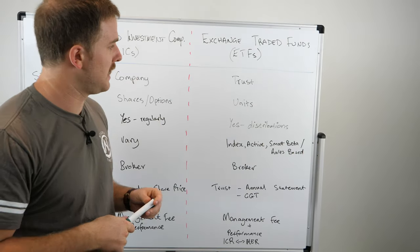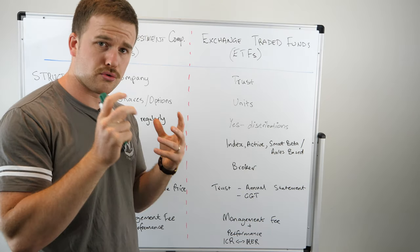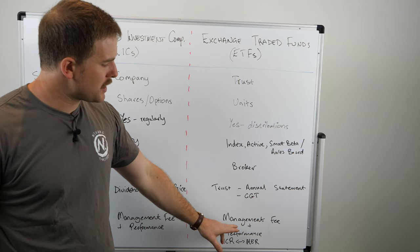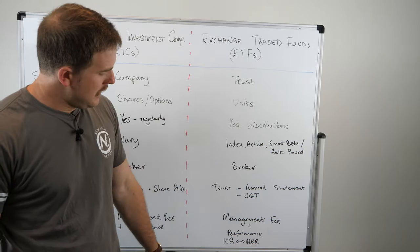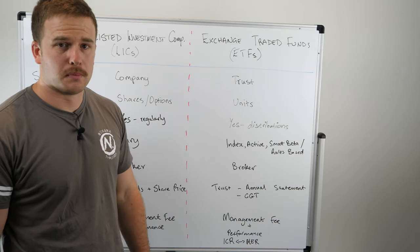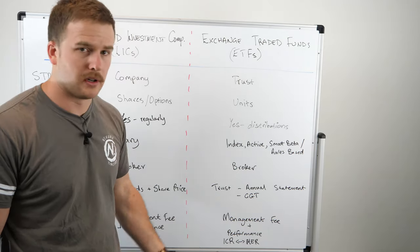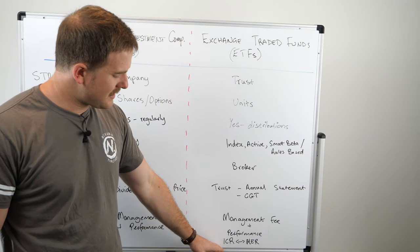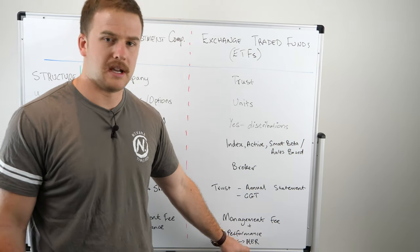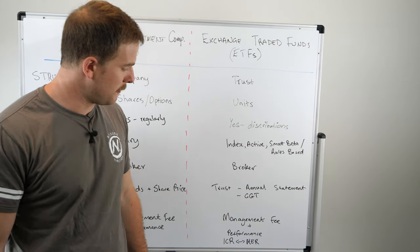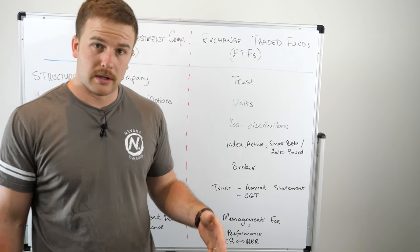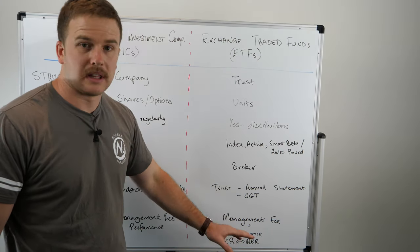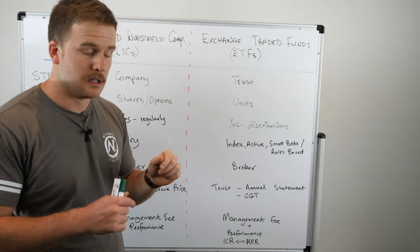An ETF is much easier to understand to get the true and transparent pricing and costs of the strategy. You'll pay a management fee, which you almost always do, and you'll occasionally pay performance fees. This is rare in Australia at the moment, but in the future I see that becoming much more prevalent. The two things you should be looking for are the ICR, the Indirect Cost Ratio, or the MER, which is the Management Expense Ratio. You should be using these as the basis to compare different ETFs in the market.